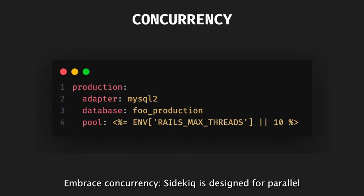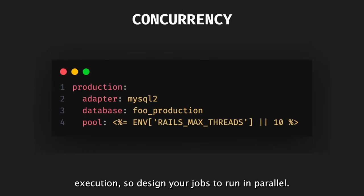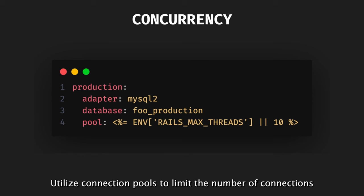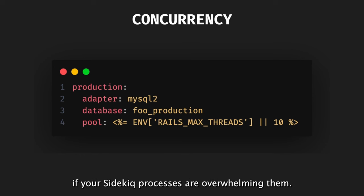Third, embrace concurrency. Sidekiq is designed for parallel execution, so design your jobs to run in parallel. Sidekiq provides features for tuning concurrency, such as targeting a Sidekiq process at a queue with a defined number of threads. Utilize connection pools to limit the number of connections to resource-limited servers if your Sidekiq processes are overwhelming them.